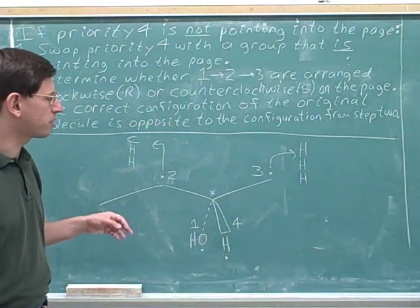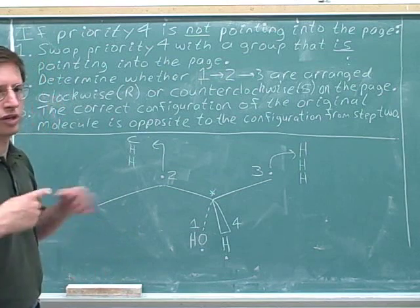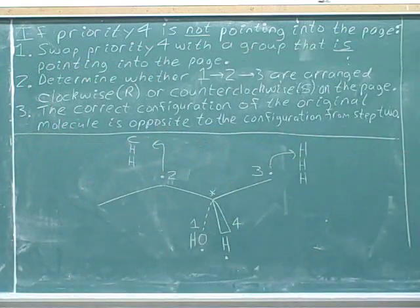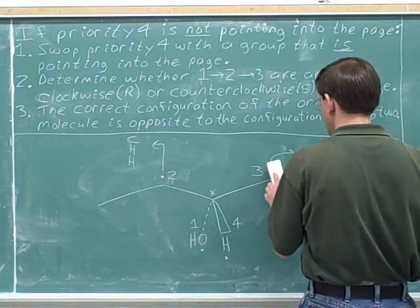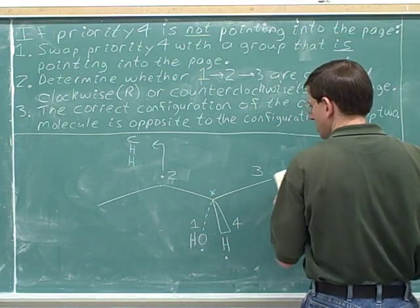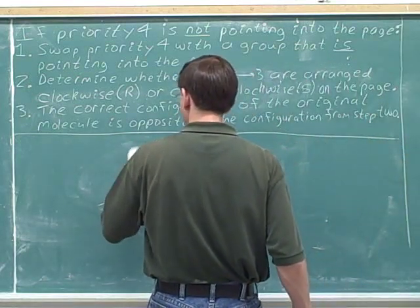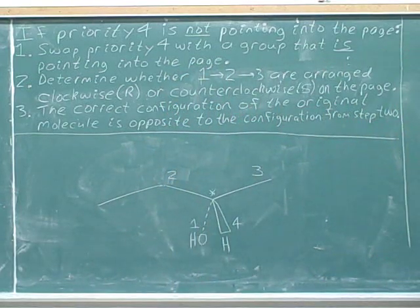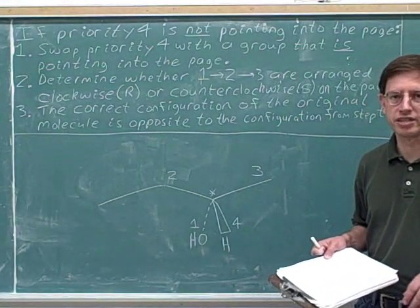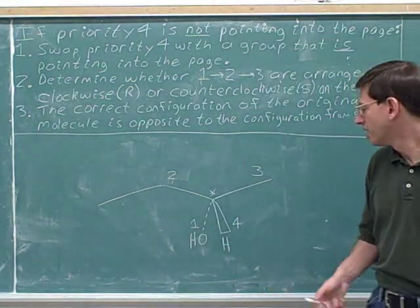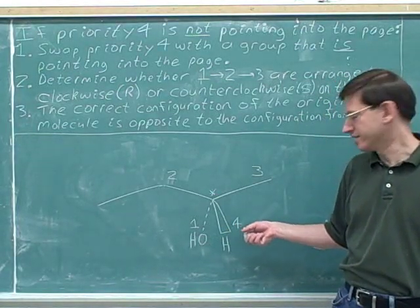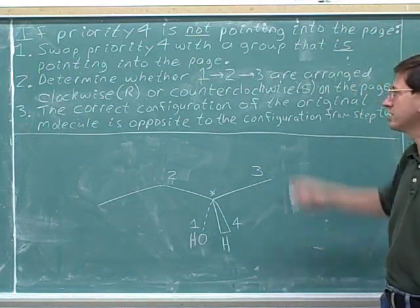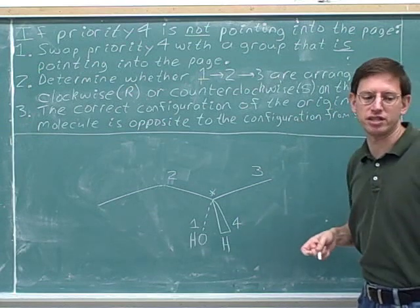After you determine the priorities, it's always a good idea to erase the work that you did so it doesn't distract you. Now we have to check where the number four priority is — is it pointing into the page or not? Here's the number four priority. It's not pointing into the page; it's on a wedge pointing out of the page. The number four priority is not pointing into the page, so step one: swap it so that it is pointing into the page.